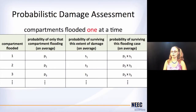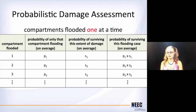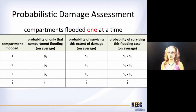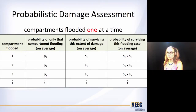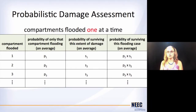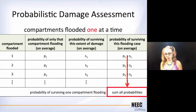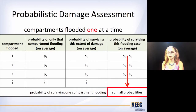So to do this for your ship, you're going to make big giant tables. The first thing is to look at the compartments flooding one by one. Look at compartment one — figure out the probability that only compartment one is going to flood, then figure out the probability of surviving compartment one being flooded. If you multiply those two together, that's P1 times S1 — the probability that you will survive compartment one being flooded. Do the same thing for compartment two, compartment three, however many you've got. Add all those together and that's the probability that you will survive any one compartment being flooded.